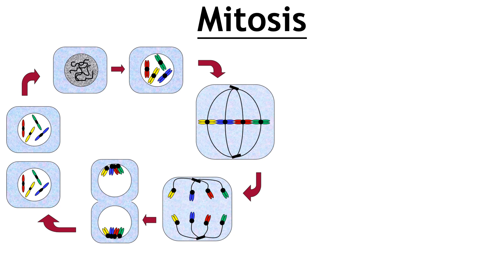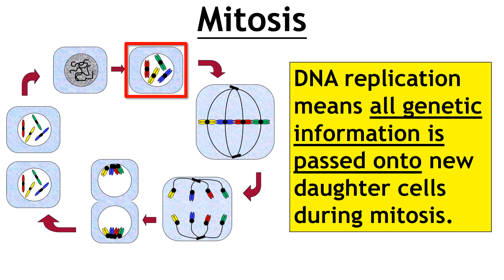Hopefully this had you thinking about mitosis. When does it occur? It occurs during mitosis — that first stage when you've got the chromosomes being copied before they line up at the equator of the cell. And the reason why it happens is to ensure that all the genetic information is passed on to new cells, so that your new cells have all the same genetic information and can make the appropriate proteins.